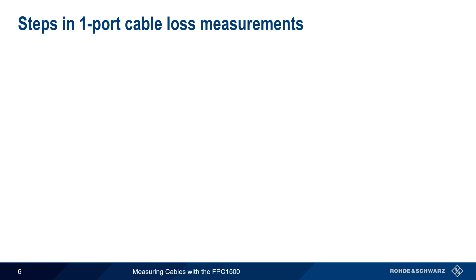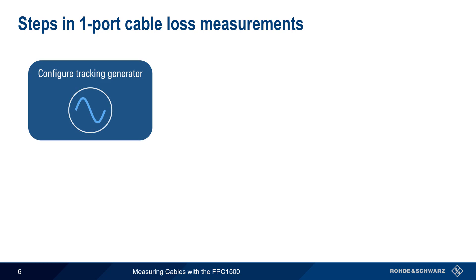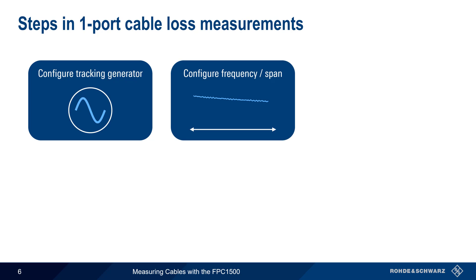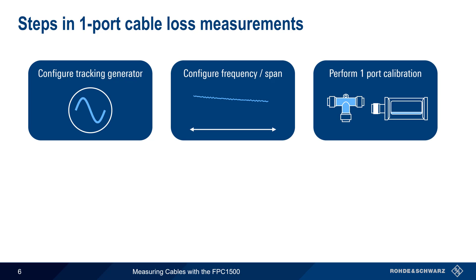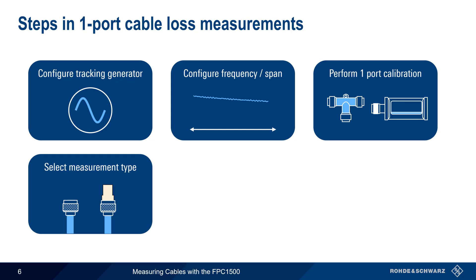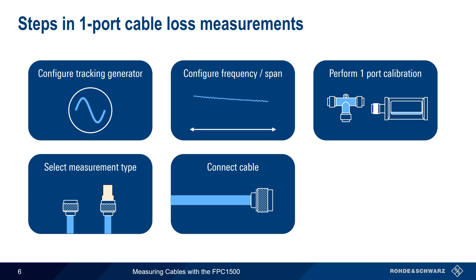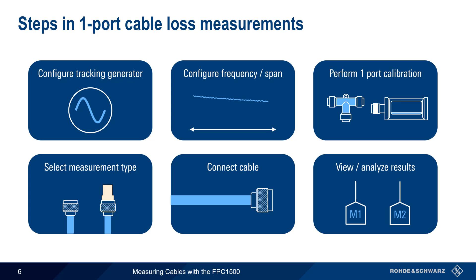There are six basic steps in making one-port cable loss measurements: configuring the tracking generator, configuring the frequency and span, performing a one-port calibration, selecting the cable measurement or termination type, connecting the cable under test, and viewing and/or analyzing the results. In the next few minutes, we'll go through each of these steps.